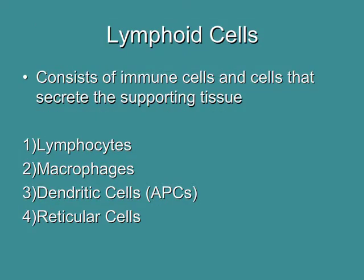Let's talk about some of the cells present in lymphoid tissues. Lymphoid cells consist of immune cells and cells that help to secrete the supporting tissue or stroma. The parenchyma cells consist of things like lymphocytes and macrophages, whereas the stroma tissue consists of reticular cells and, to some extent, dendritic cells.